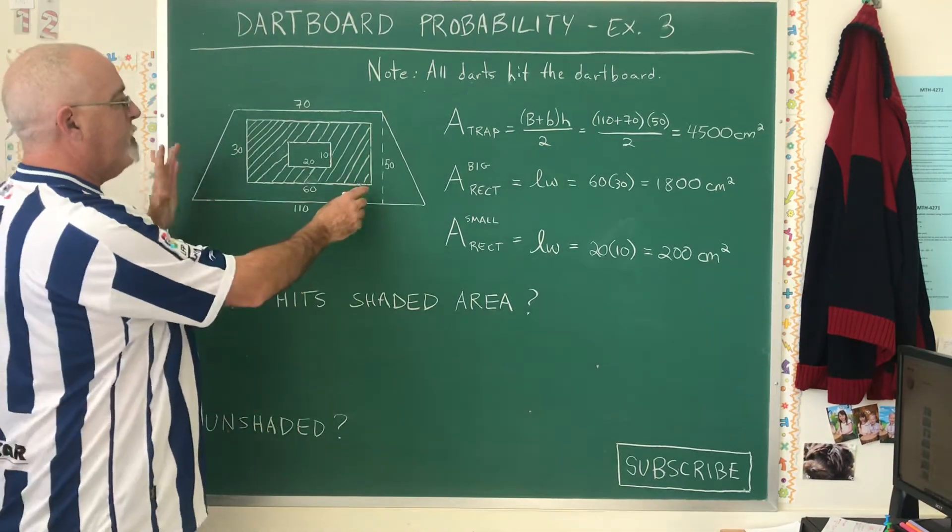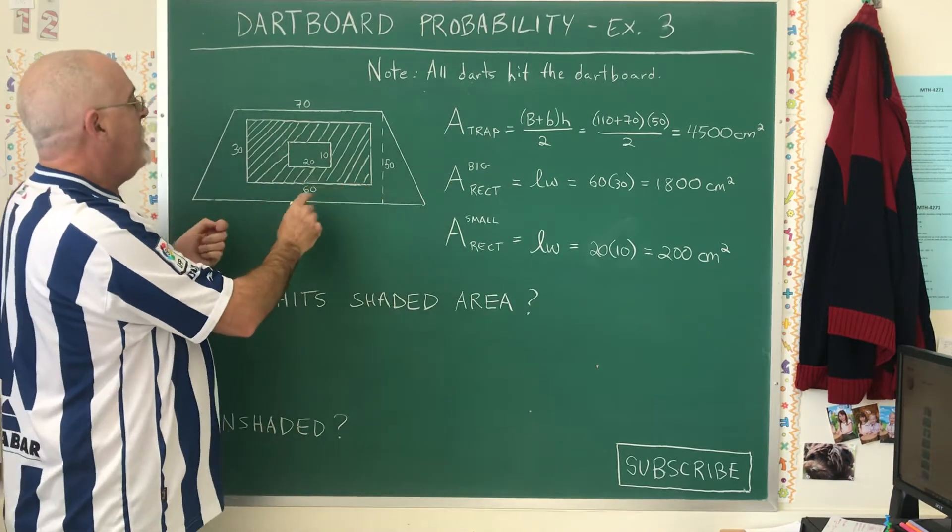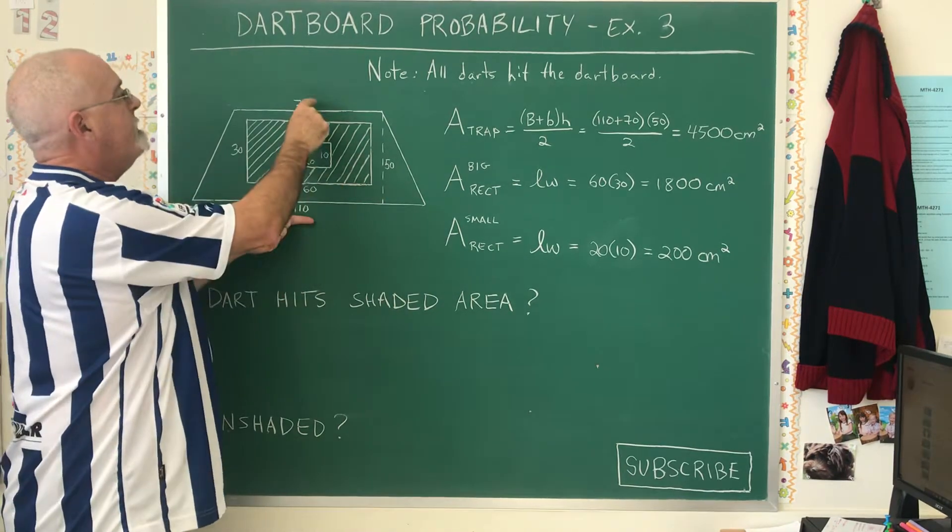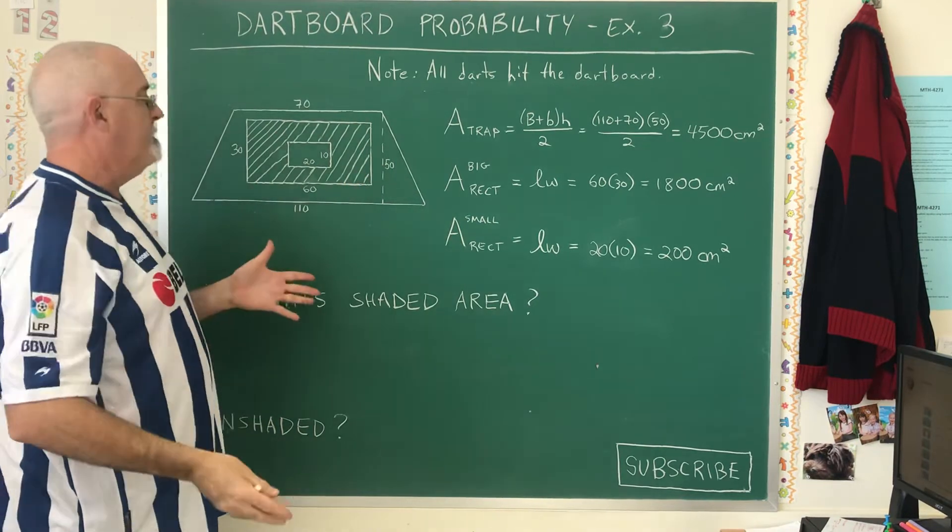Here we have a dartboard that is shaped like a large trapezoid with a big base of 110, a small base of 70, and a height of 50. This is in centimeters.